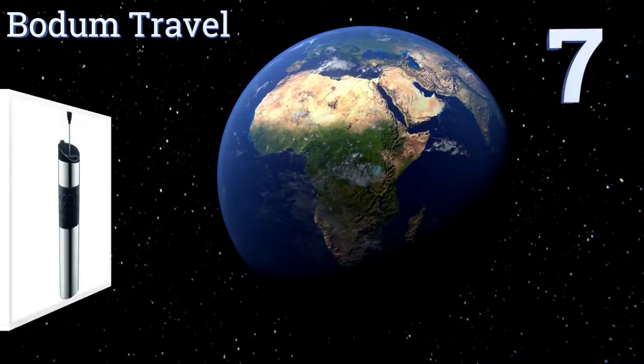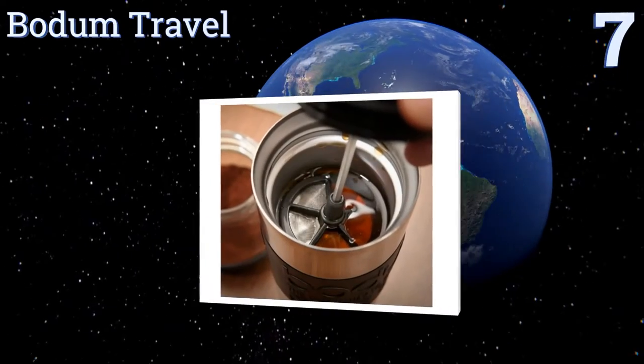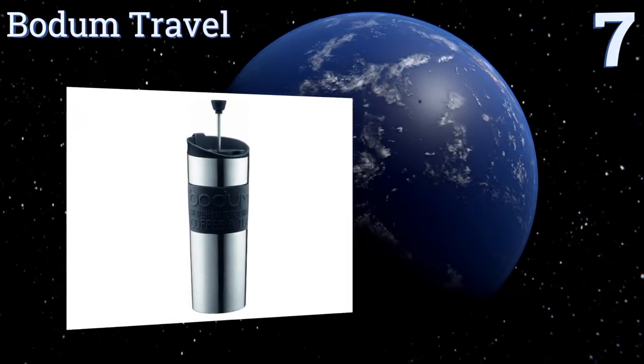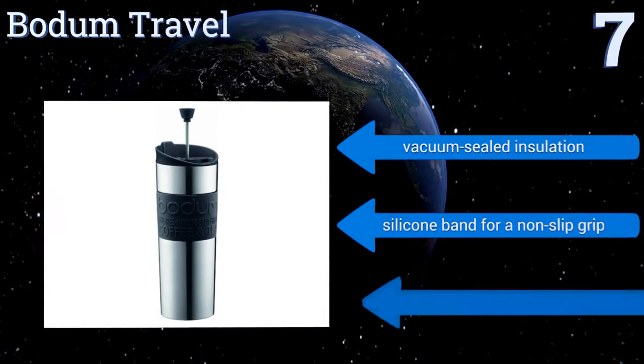At number seven, if you want to make and drink your coffee out of one unit, the Bodum Travel is right up your alley. It allows you to make your French press style coffee right in the same mug you take to work with you, so you save time and dirty less dishes in the morning. It features vacuum-sealed insulation, a silicone band for a non-slip grip, and a spill-proof lid.